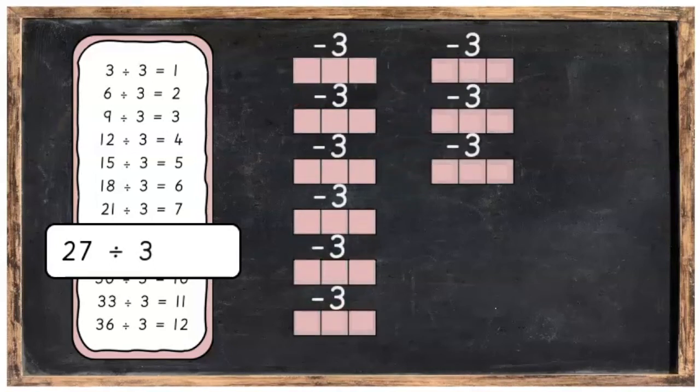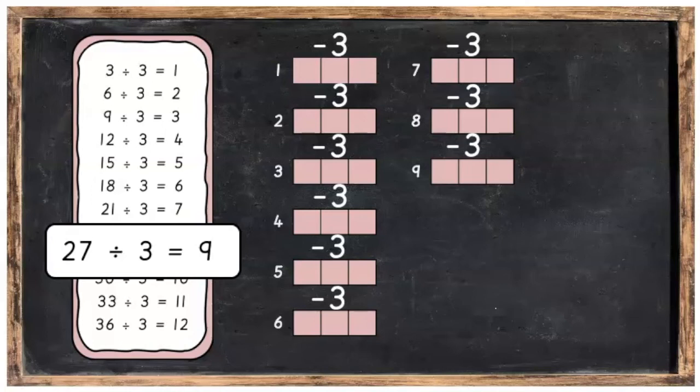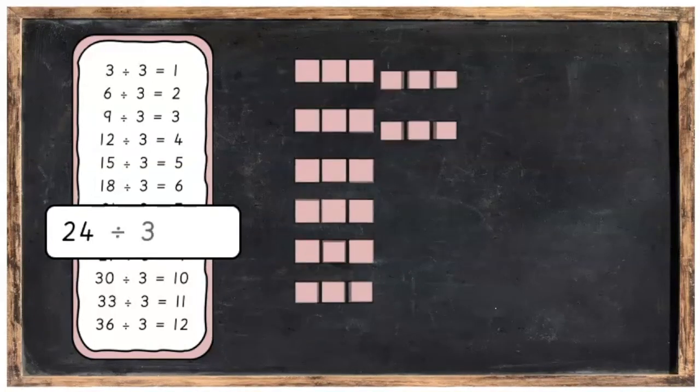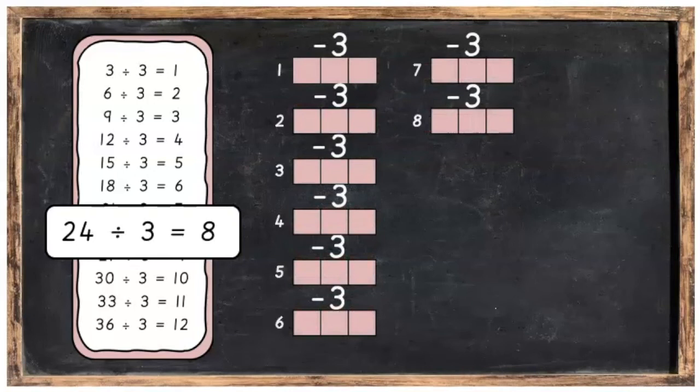27 take away 3. How many times can we take away? 9 times. So there's 9 groups of 3 there. With 24, we can take away the number 3, 8 times. There's going to be 8 groups of 3.